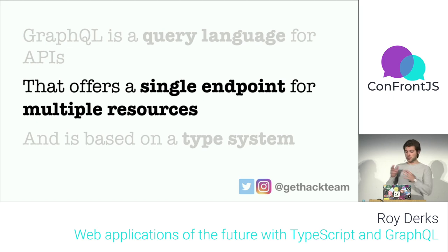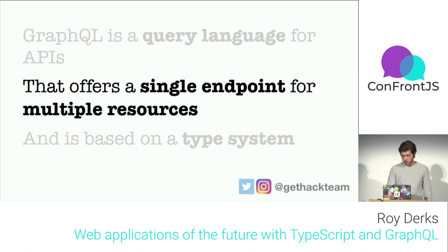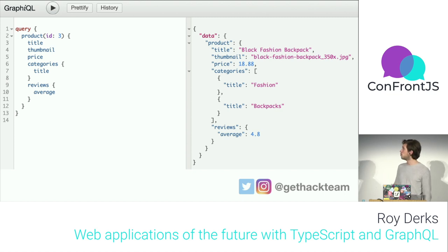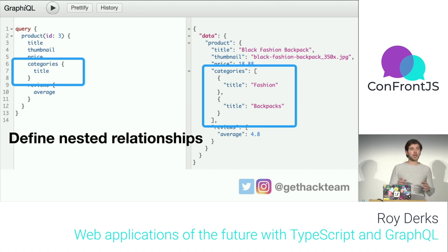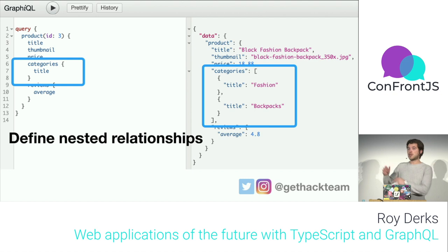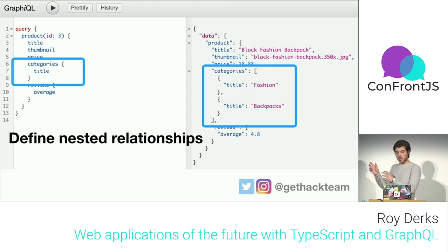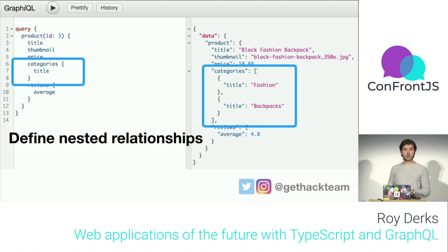You send a request to a single endpoint, but it doesn't only return data from one collection like REST does. It returns data from multiple resources. So in a query I can also ask for categories — a relationship with product. The response returns an array of category titles. With one single endpoint and one query, you can retrieve more information than from a single REST endpoint.